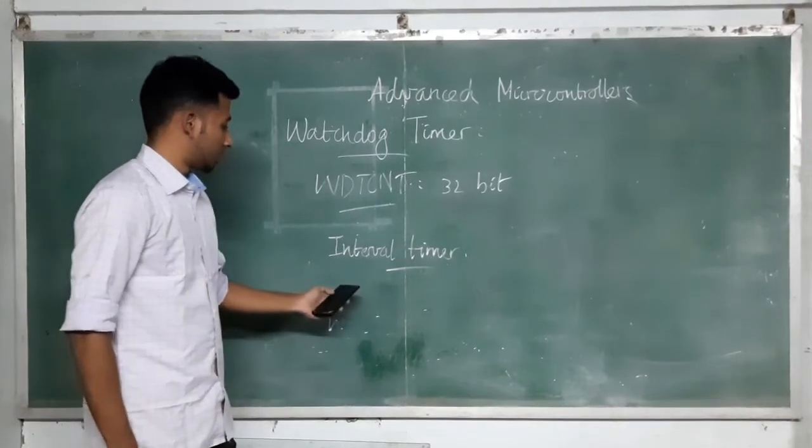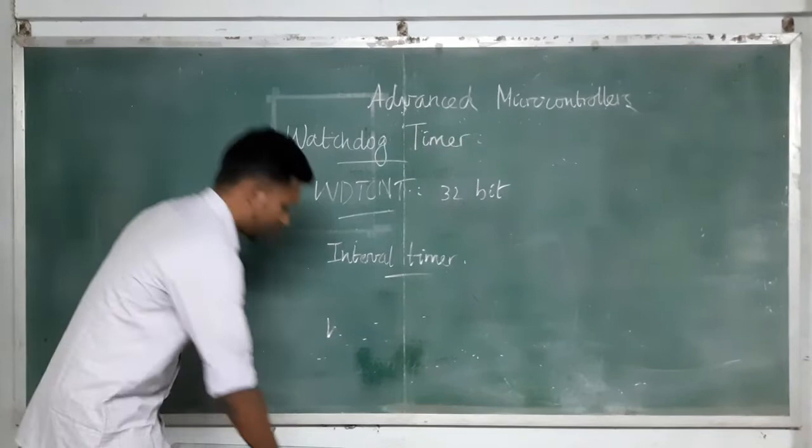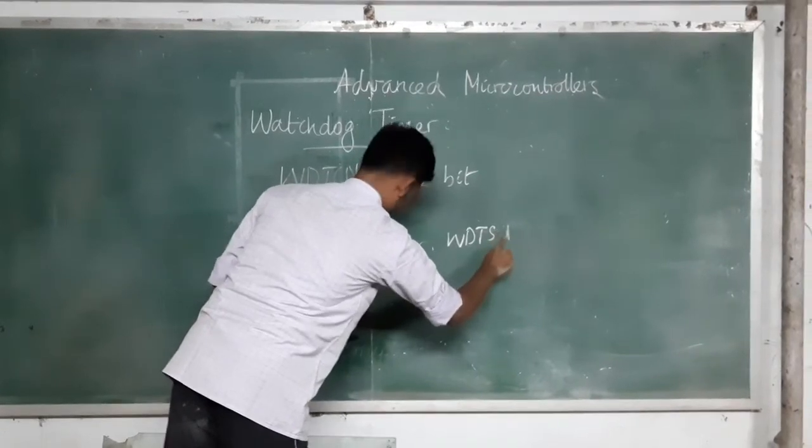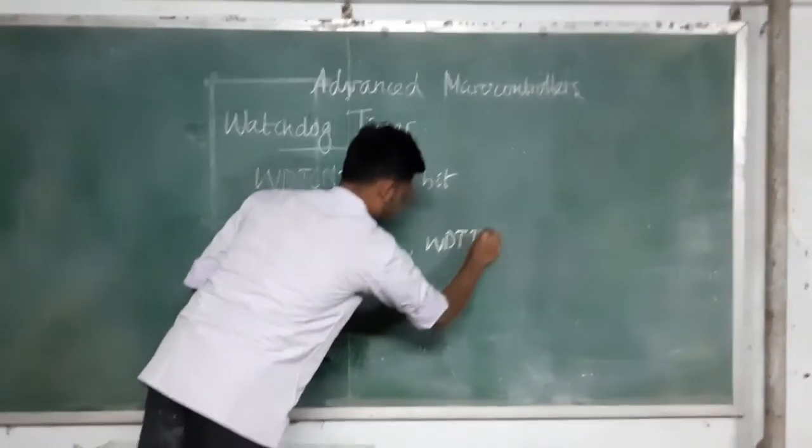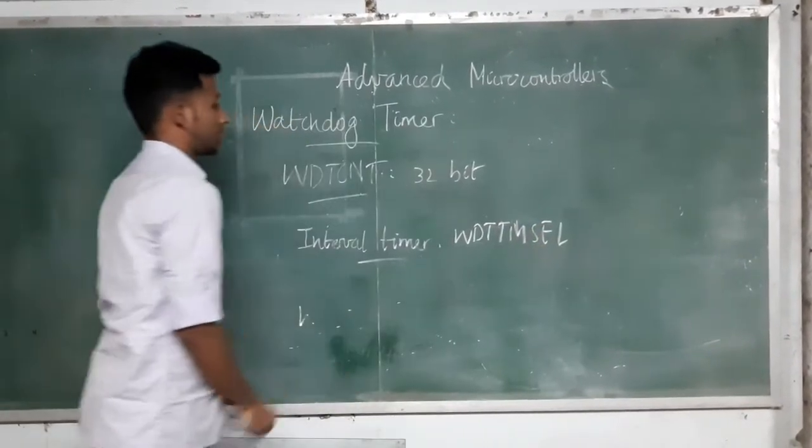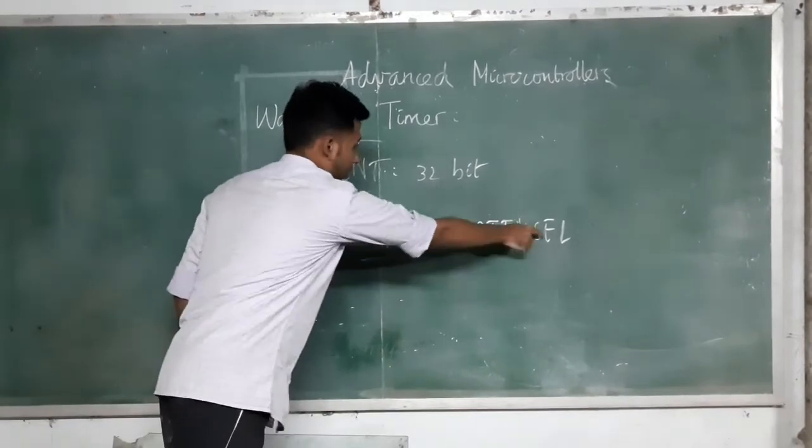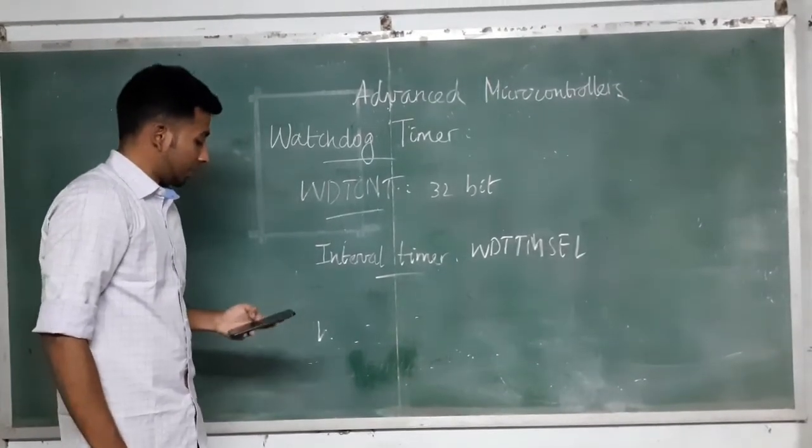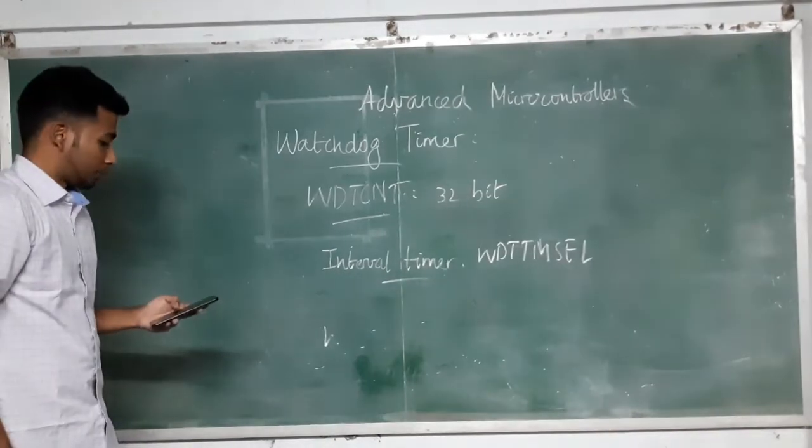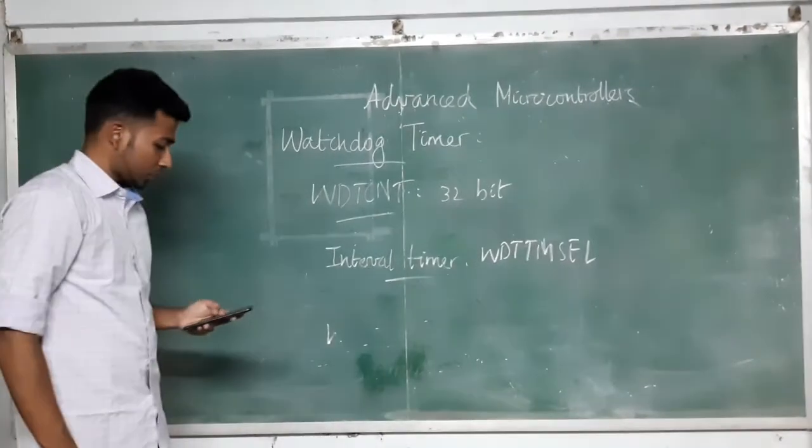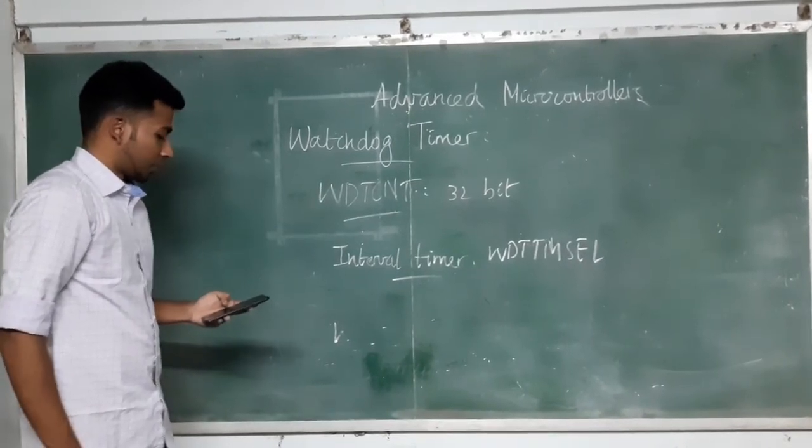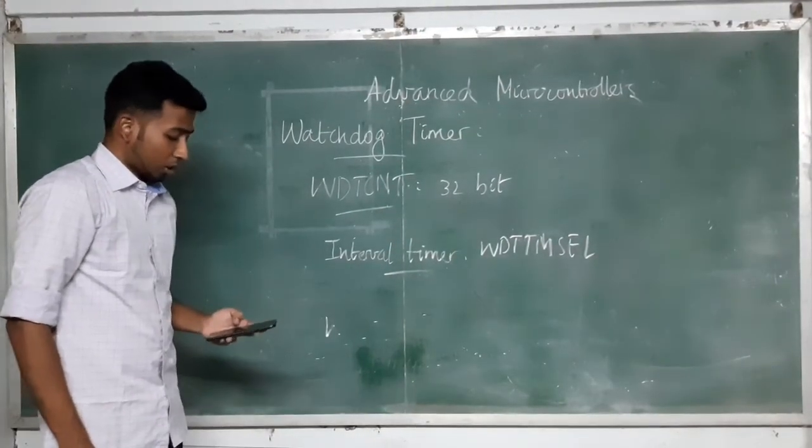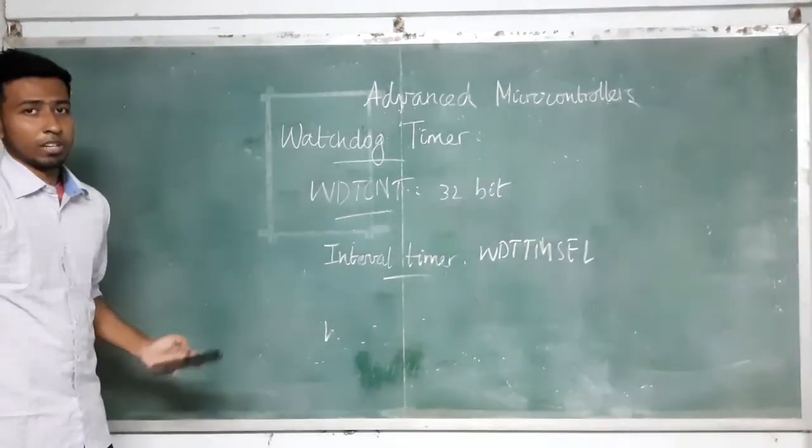Next we will see the interval timer. Setting the WDTTMSEL bit, that is the watchdog timer mode selection bit to 1, selects the interval timer. This mode can be used to generate periodic intervals. In interval timer mode, the WDTIFG flag is set at expiration of the selected time interval. If the enable bit remains unchanged, the interrupt flag is automatically reset. The interrupt vector address in the interval timer mode is different from that in the watchdog mode. Thank you.